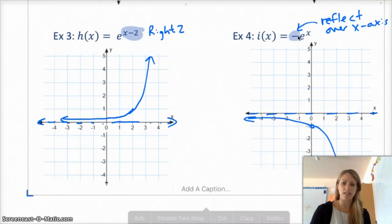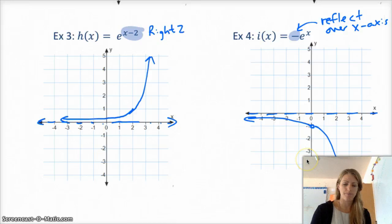And then, example 4 is reflect over the x-axis. Your asymptote doesn't change in that case, and it goes through the point 0, negative 1.